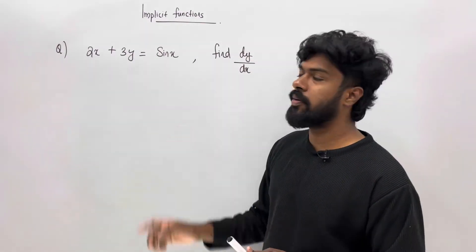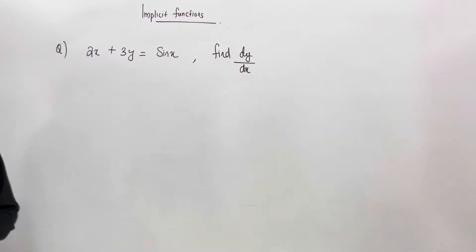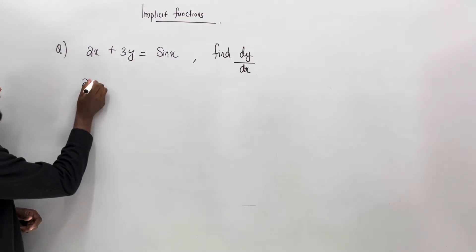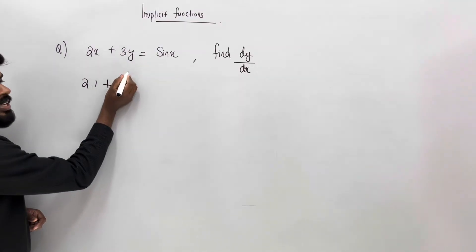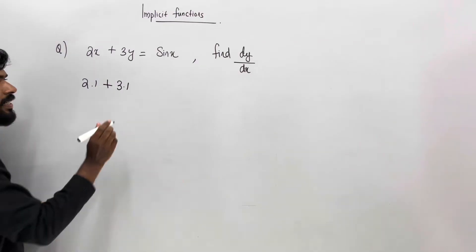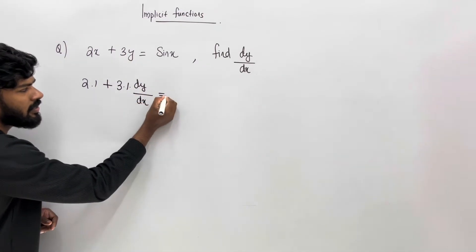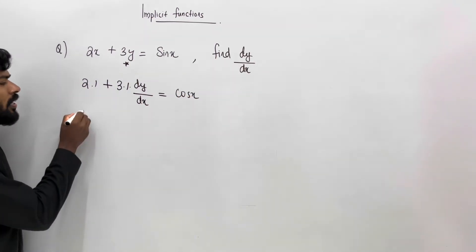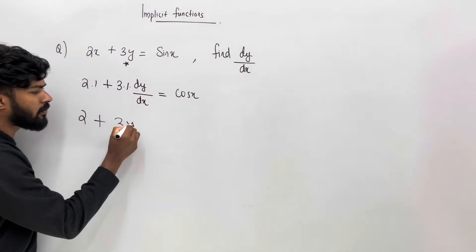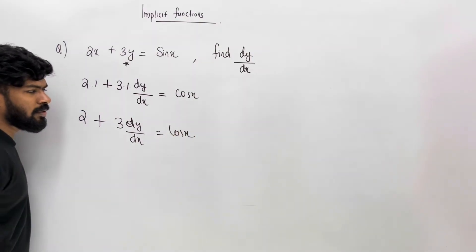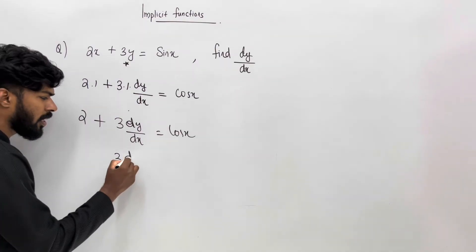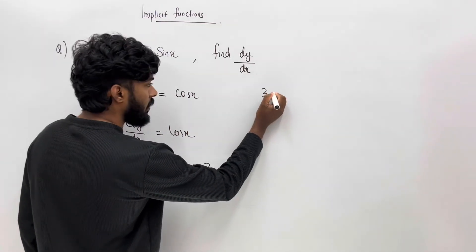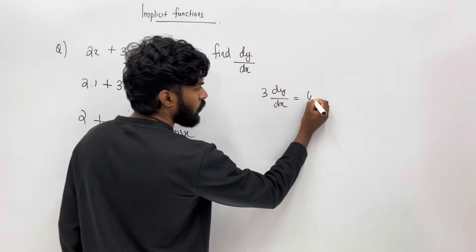2x plus 3y equal to sin x — find dy/dx. If you take the derivative: two x derivative is 2 into 1 equals 2. Plus 3y derivative: 3 into dy/dx equals 3 dy/dx. Sine x derivative is cos x. Then 2 plus 3 dy/dx equals cos x. So 3 dy/dx equals cos x minus 2.